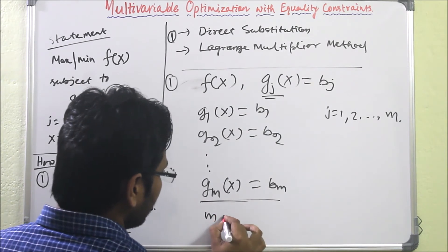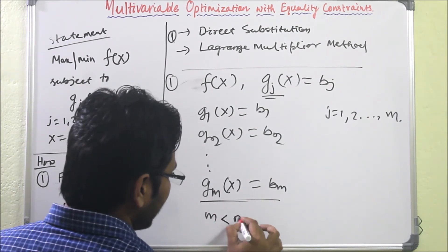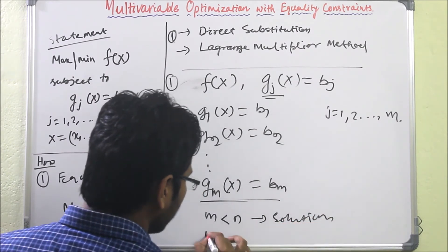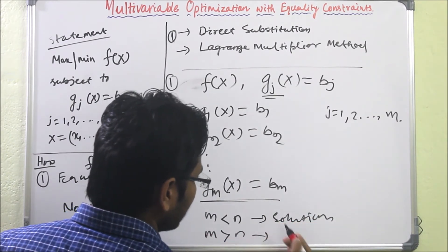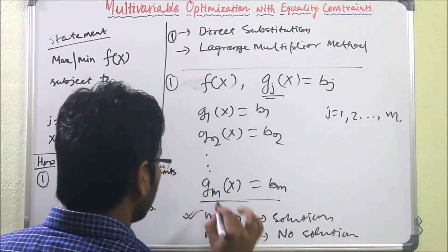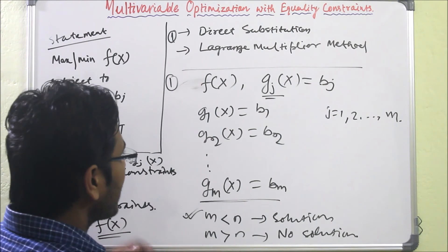If m is less than n, then it gives some solution. But if m greater than n, that time it will give no solution. So it will be applicable only when m is less than n.